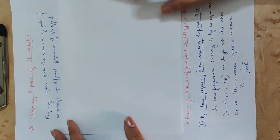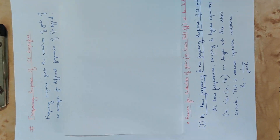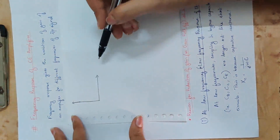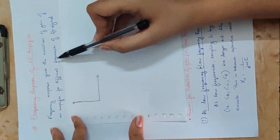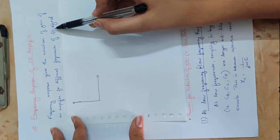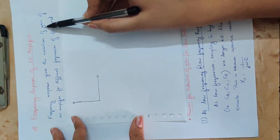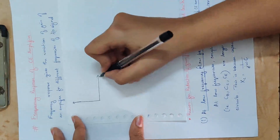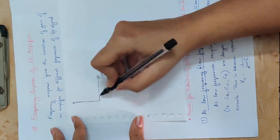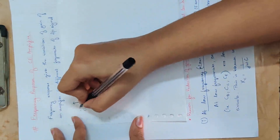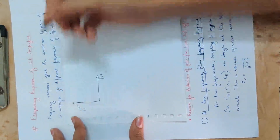Now let's look at this graph. We have the y-axis and x-axis. On the x-axis we have the frequency of the input signal, and on the y-axis we have the gain variation.